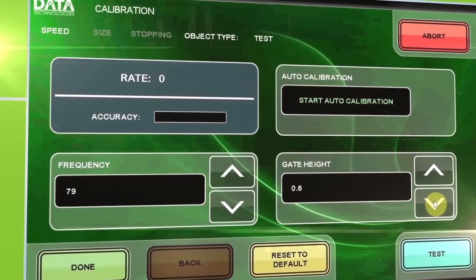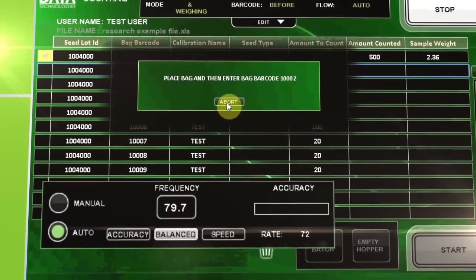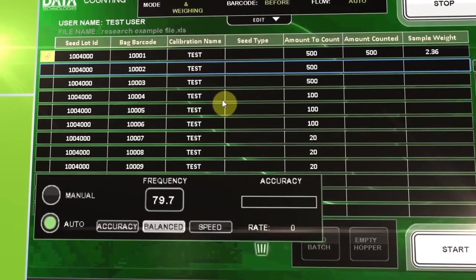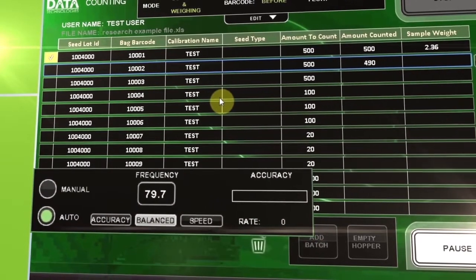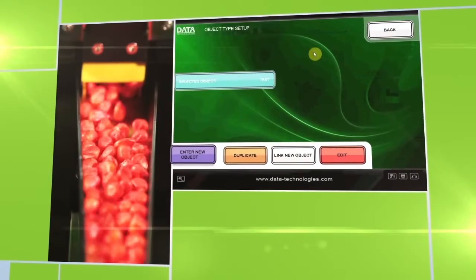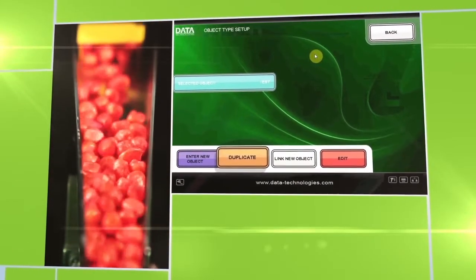Automatic real-time calibration of various seed types assures maximum accuracy and speed, preventing human counting errors. The software features a clear, multilingual user interface.